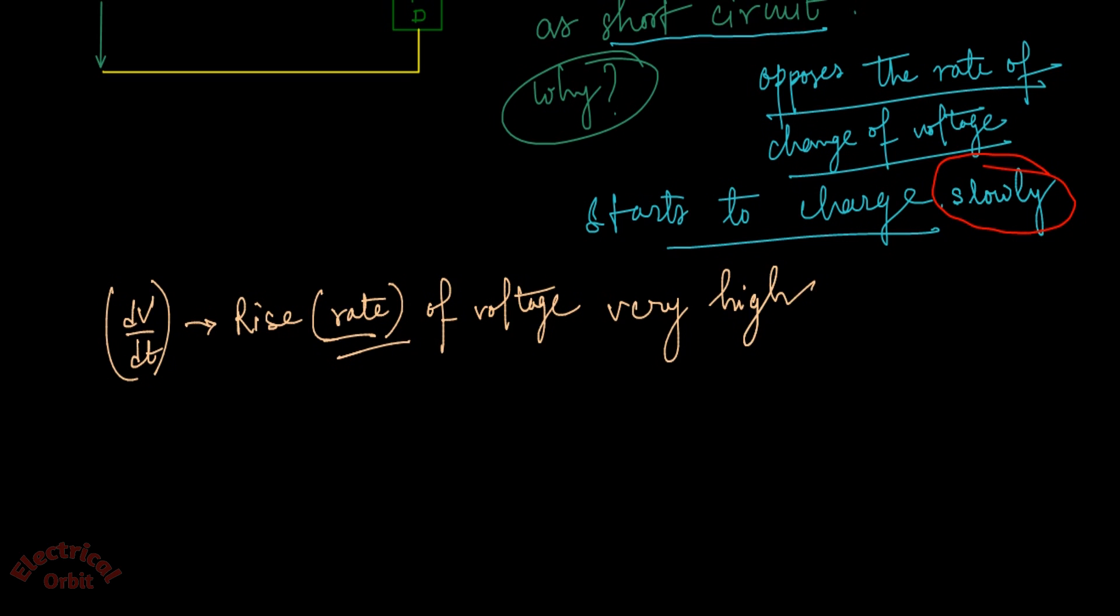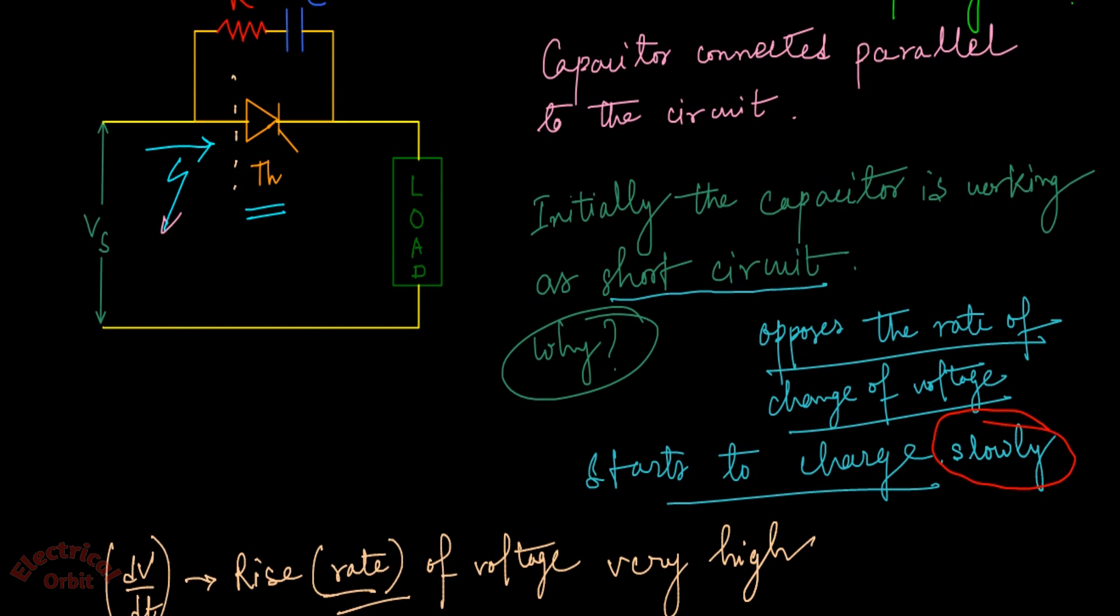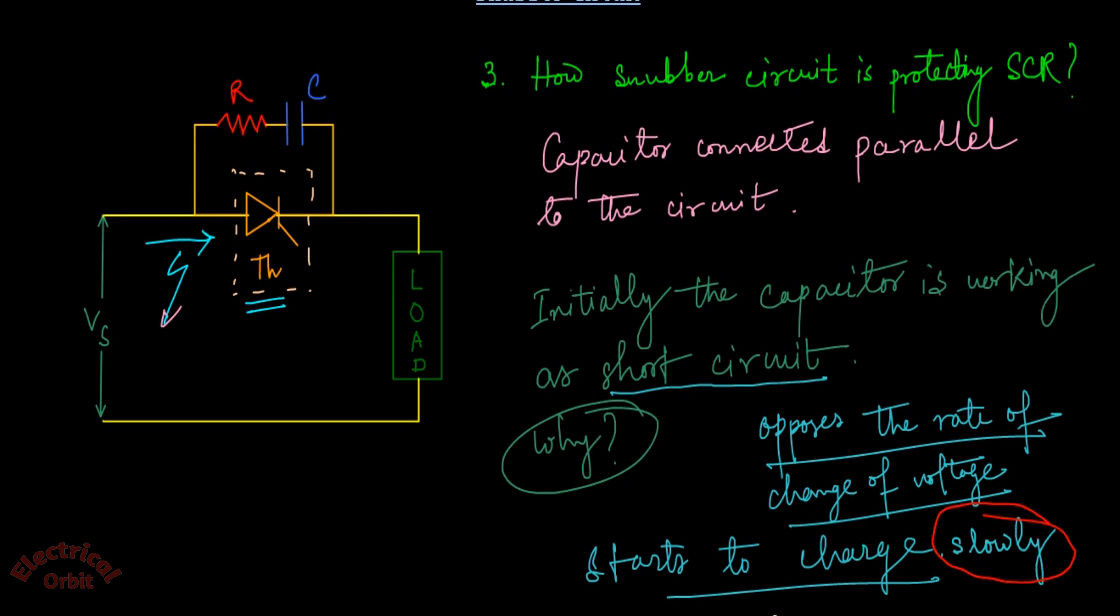Now if the rise of voltage with respect to time, or the rate, is very high, then it may damage the SCR or the thyristor. Now if this capacitor is slowing down the process of dv/dt through its own charging, then the entire arrangement—that is both this thyristor as well as this RC circuit—the rise of voltage slows down and we can avoid a sharp overvoltage across this thyristor.